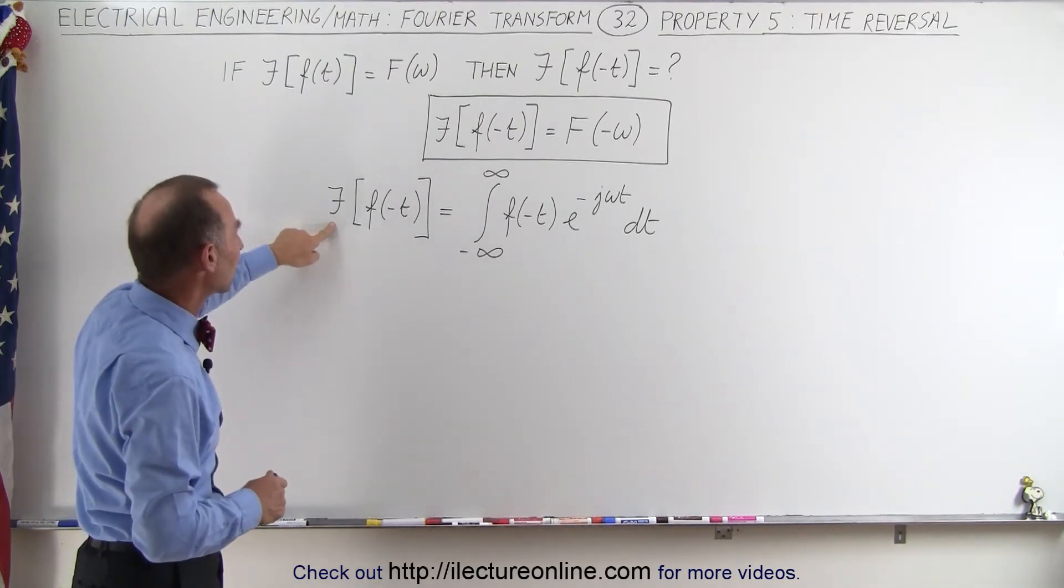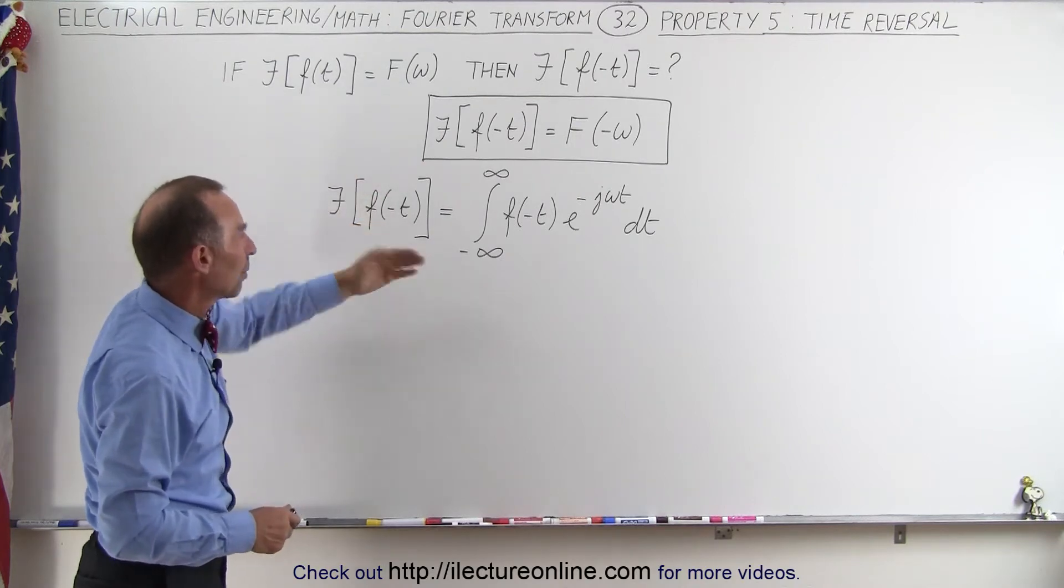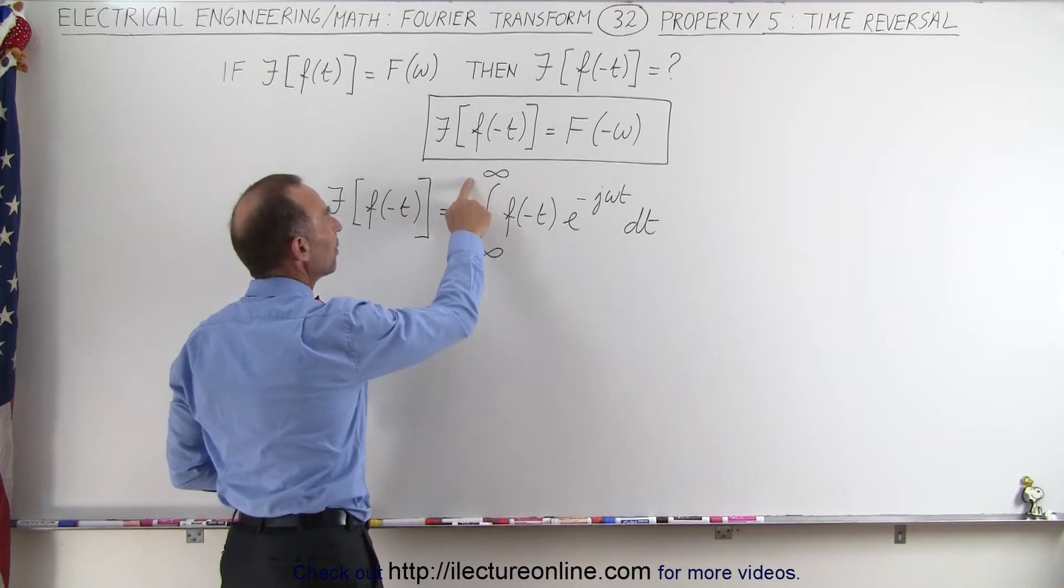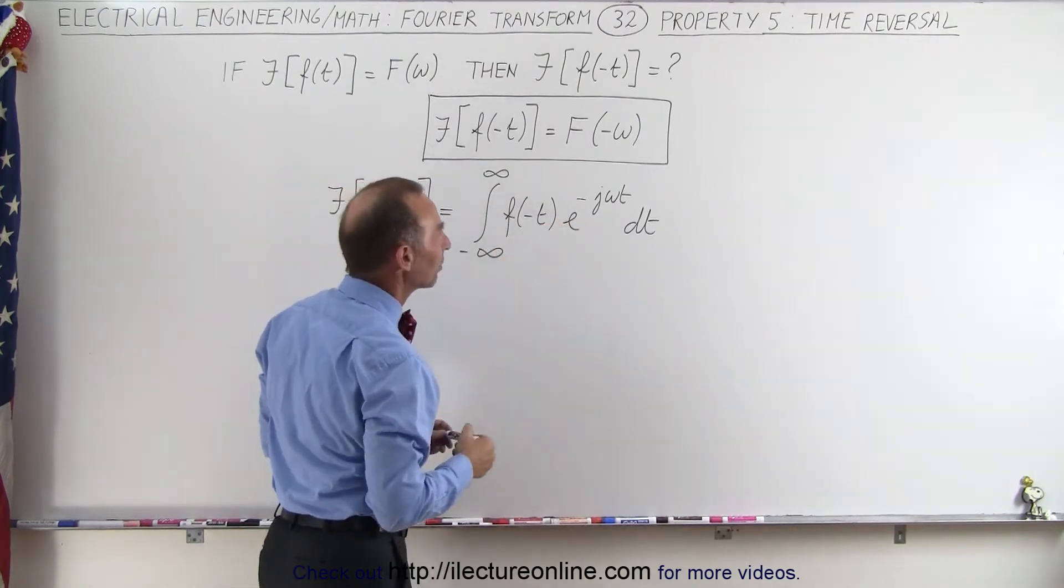So here we have the Fourier transform of the original function but with the time reversed. So when we put that into general format we have the integral from minus infinity to infinity of f of negative t e to the minus j omega t.